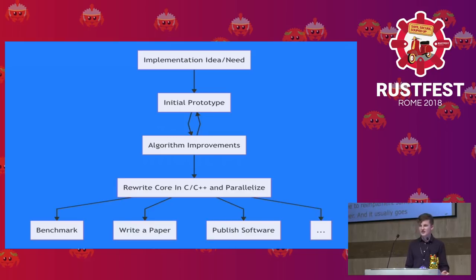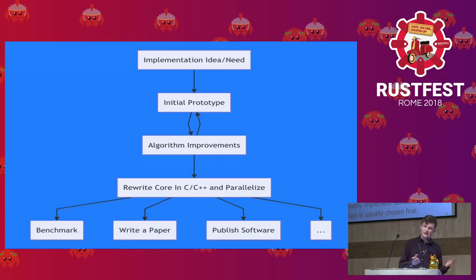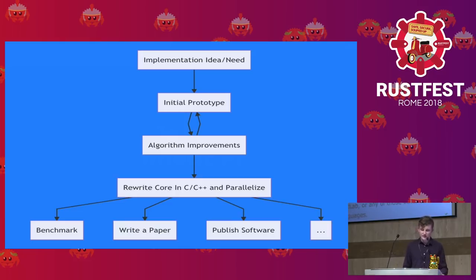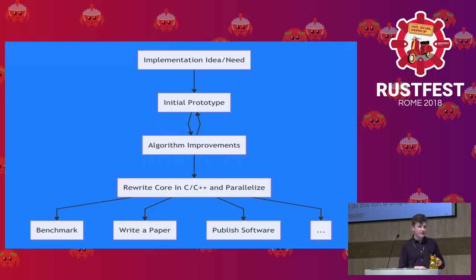C++ is usually chosen for two reasons: tradition, because science doesn't move as quickly as programming does, and because C++ is already widely used, with tools, ecosystems, and libraries already there. But it's mainly that rewriting step where Rust could come in.